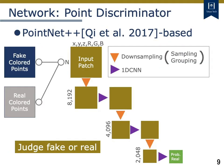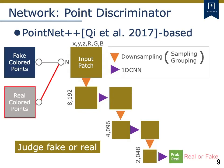Next, I will explain the point discriminator. The point discriminator is fed with fake data colored by the generator or real data. The point discriminator is PointNet++, which computes the probability of real data for feature maps. In other words, the point discriminator judges whether the input data is real or fake.